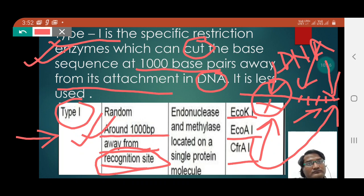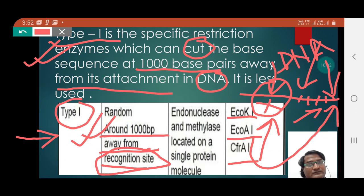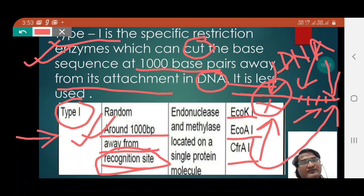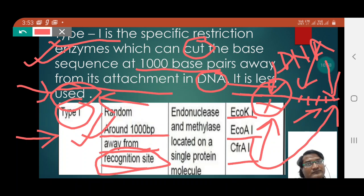The problem with the type 1 enzyme is that it takes 1000 base pairs from the recognition site to act upon, cutting the DNA quite distant from its recognition site. This is why type 1 is less used — because it does not cut the DNA at the exact point of its attachment.